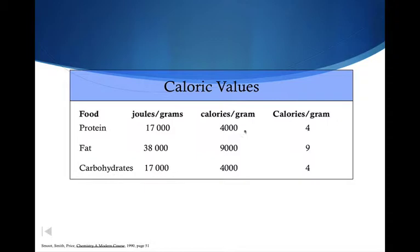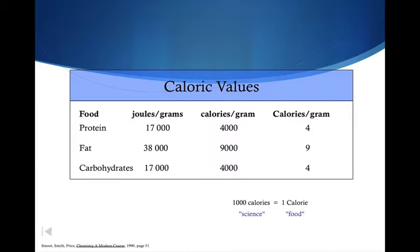Out of proteins, carbohydrates, and fats, fats have the most calories — by quite a bit, over double. One thousand little c calories equals one big C Calorie. In science we use the little c calories. When using a calorimeter and measuring values, we're using the small c calories, which are a lot closer to joules — and quite often we actually use joules in Canada. One little c calorie is equal to 4.184 joules, so you'd need about 4,184 joules to equal one big C Calorie.